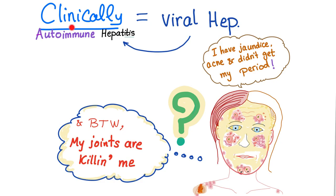Clinically speaking, autoimmune hepatitis is very similar to viral hepatitis. Importantly, people with self-limited viral hepatitis, such as hepatitis A, are at increased risk of developing autoimmune hepatitis for an unknown reason. Therefore it is important to perform relevant lab tests.